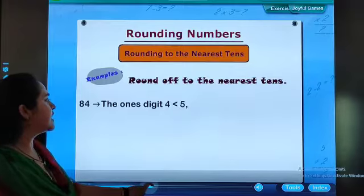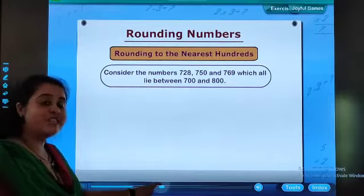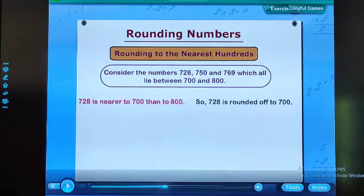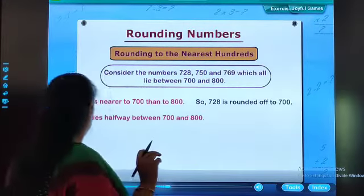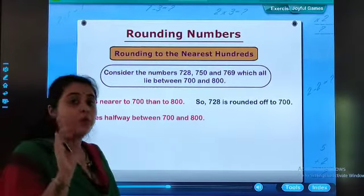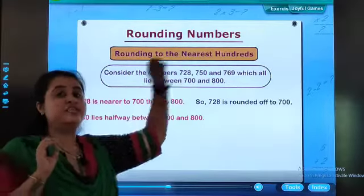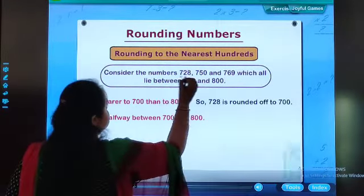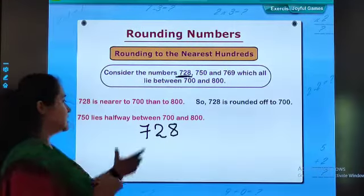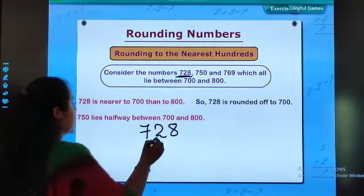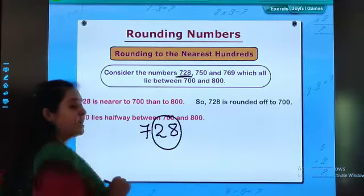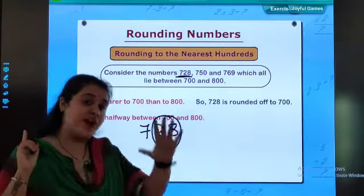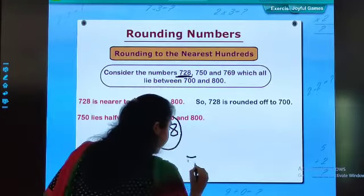Now, rounding to the nearest hundreds. Consider the number 728, 760 and 768 which lie between 700 and 800. 728 is nearer to 700 than to 800, so 728 is rounded off to 700. Students, whenever it comes to the nearest hundreds, we will be focusing on the last two digits. That is, 728. We will be focusing on the last two digits - 28 is less than 50.